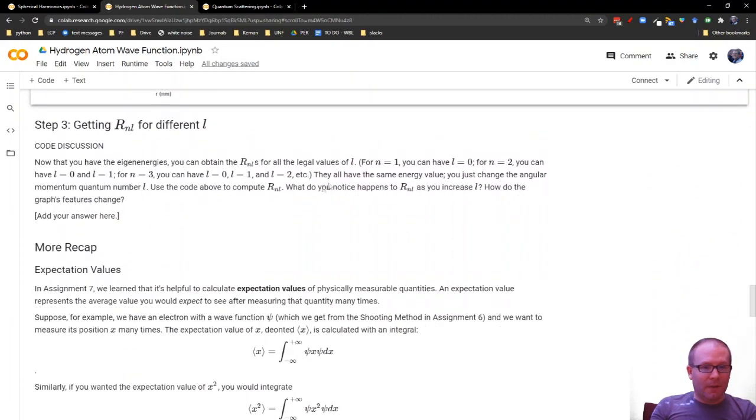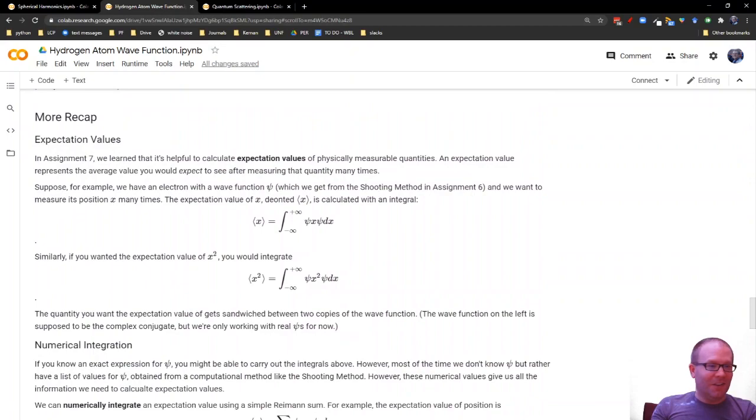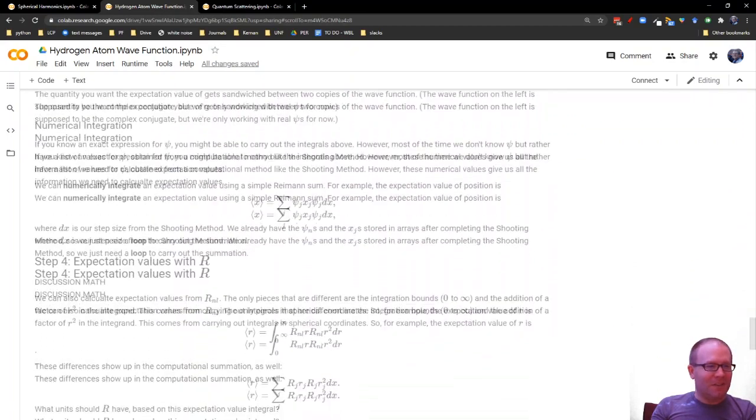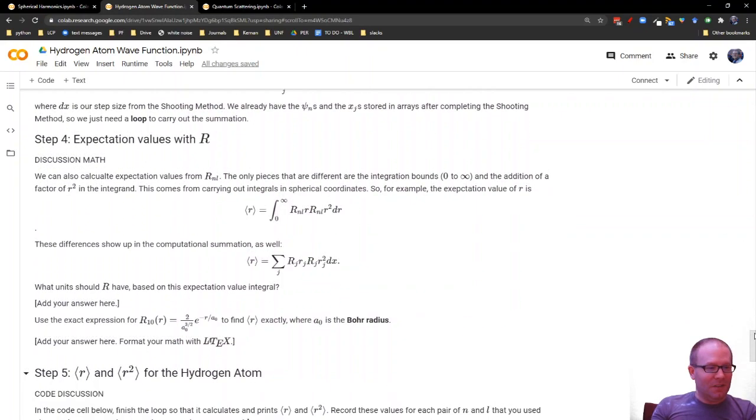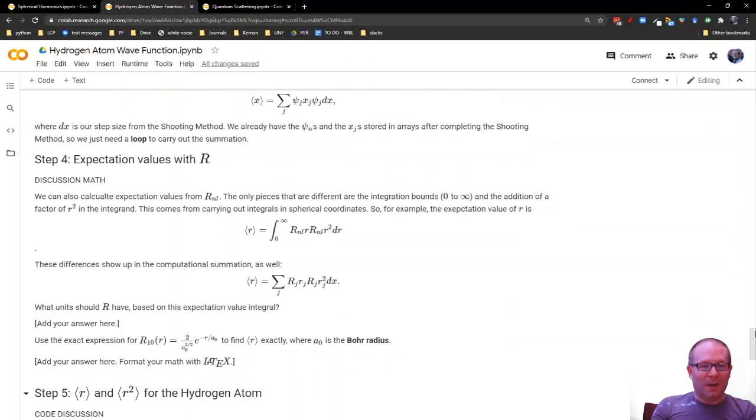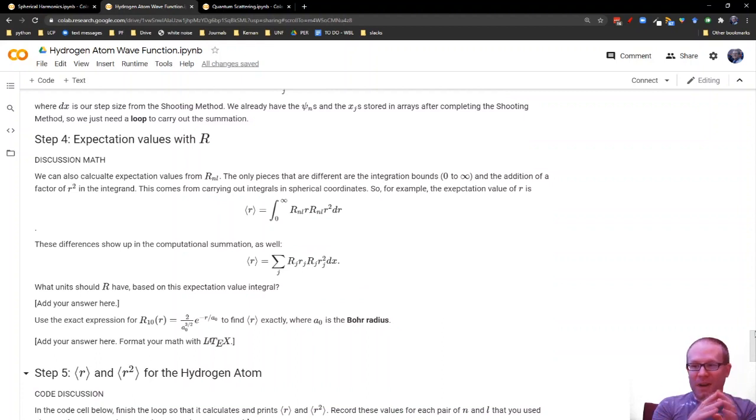So you'll play around with that. And then down here, look, there's more expectation values. So you use this to calculate the expectation value of the position. Really important process there because that tells you where the electron is likely to be.